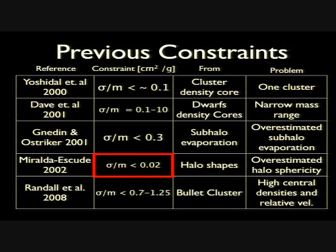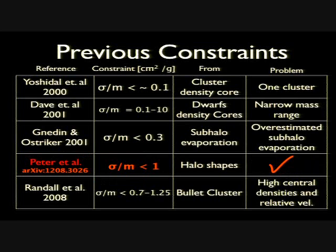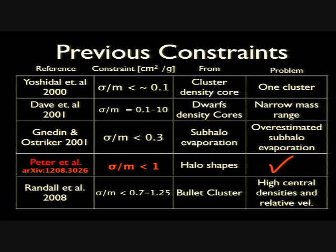However, I could point out a problem with every single one of these constraints. The most stringent of these constraints is off by two orders of magnitude, as demonstrated by Annika Peter et al. through simulations. This is out on the arXiv today alongside my paper — these two are companion papers. We study halo shapes in Peter et al. and everything else I'm going to show you in Rocha et al.